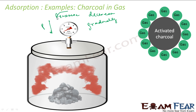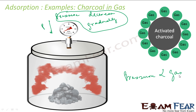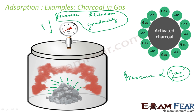Just by introducing charcoal, the pressure decreases gradually. The reason is that pressure is due to the gas. If you decrease the concentration of gas, the pressure decreases. So the decreasing pressure clearly shows that the concentration of gas is decreasing — meaning the gas molecules are getting adsorbed on the surface of the charcoal. The adsorption occurs only on the surface of the charcoal.